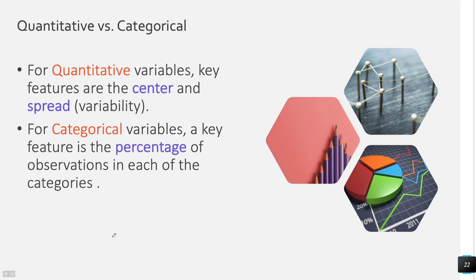The reason we split the two types is because for quantitative variables we can do measures of center like the mean and median, which aren't possible for categorical variables. We can't average red, yellow, and green. We can't measure the deviation between red, yellow, and green — we can't take the standard deviation of those.